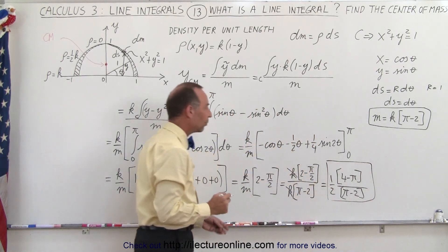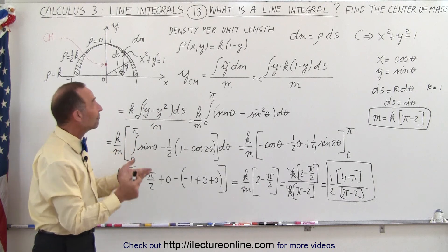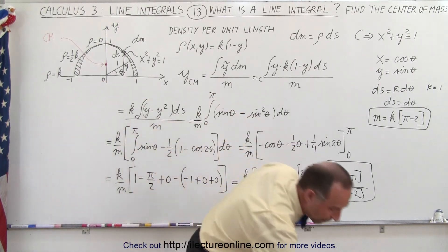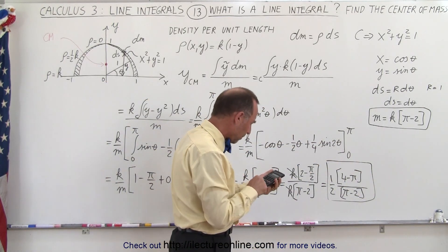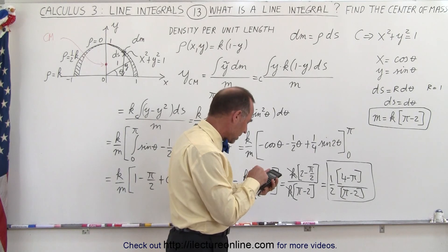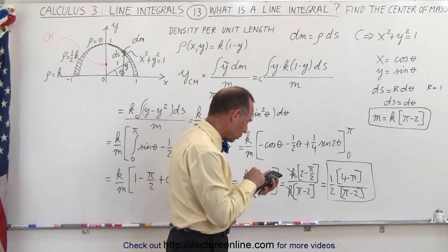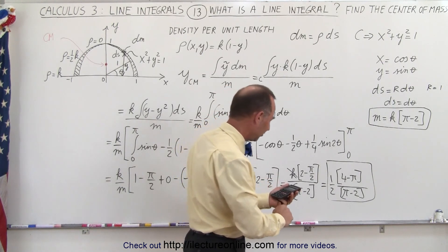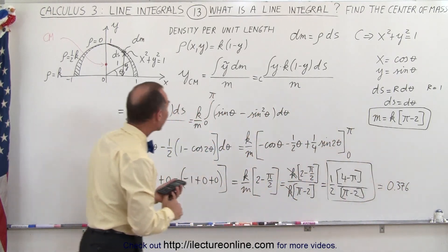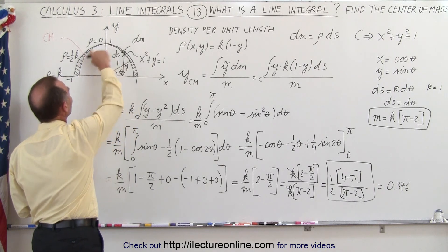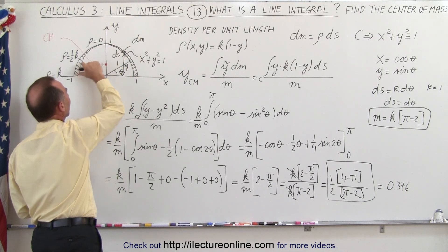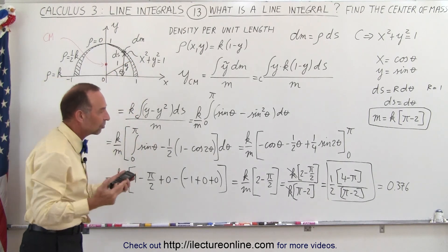That's probably the best way to write the answer. We found the distance to the center of mass from the origin. Let's see if that makes sense numerically: taking (4 minus π) divided by 2, divided by (π minus 2), equals approximately 0.376. So the center of mass is about one-third of the way up. Most of the wire is higher up but thinner with less density, while the lower wire is shorter but denser — so the answer seems plausible.